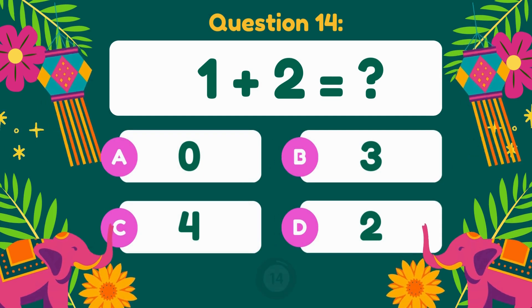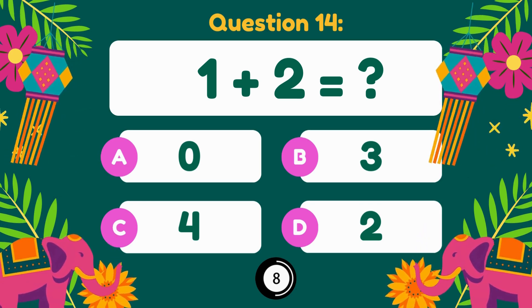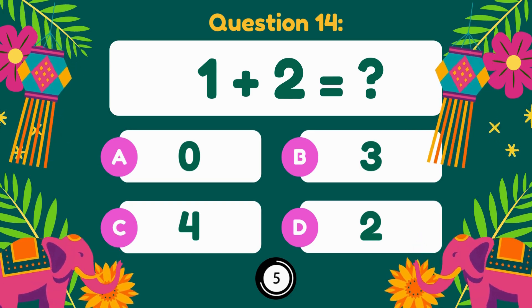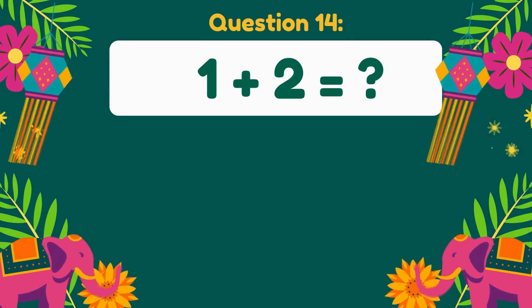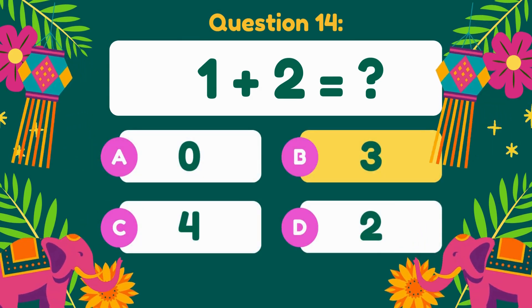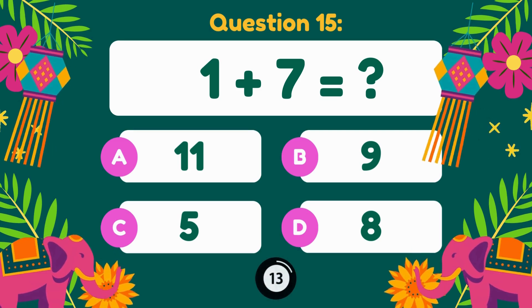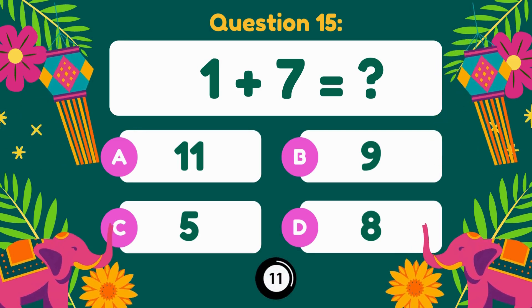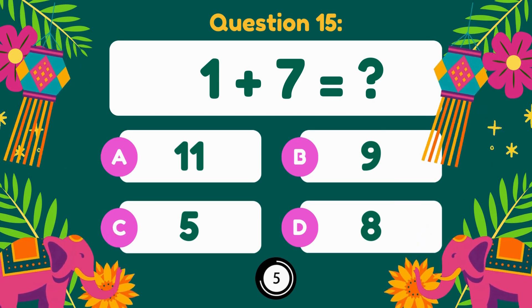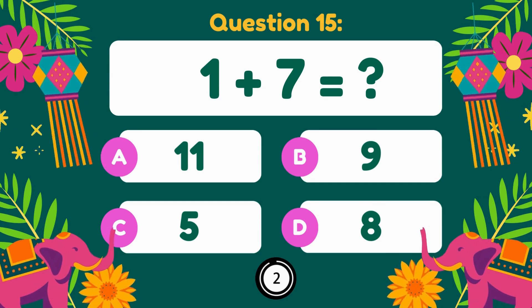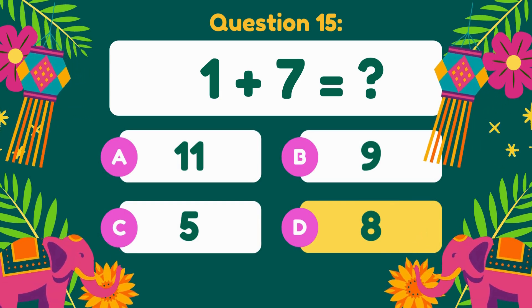1 plus 2 equals. 1 plus 2 is equal to 3. 1 plus 7 equals. 1 plus 7 is equal to 8.